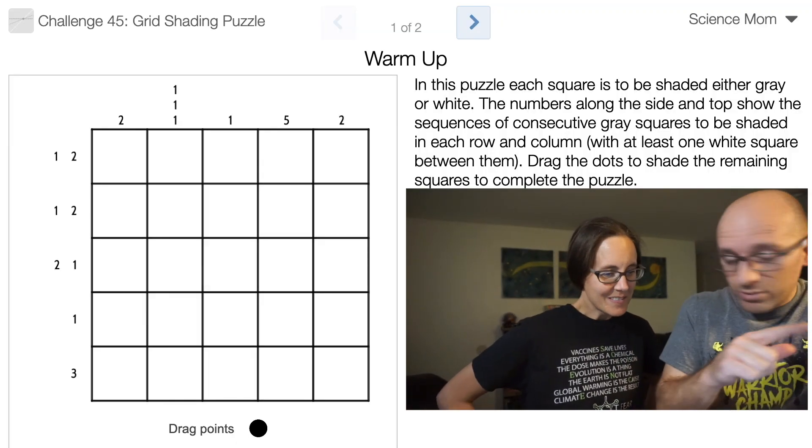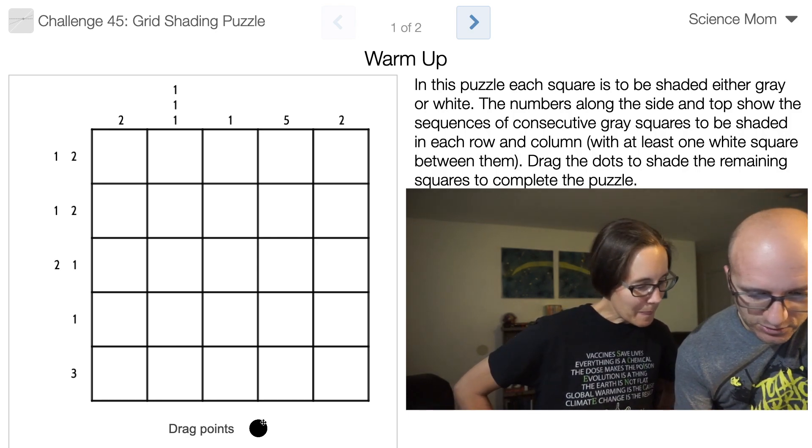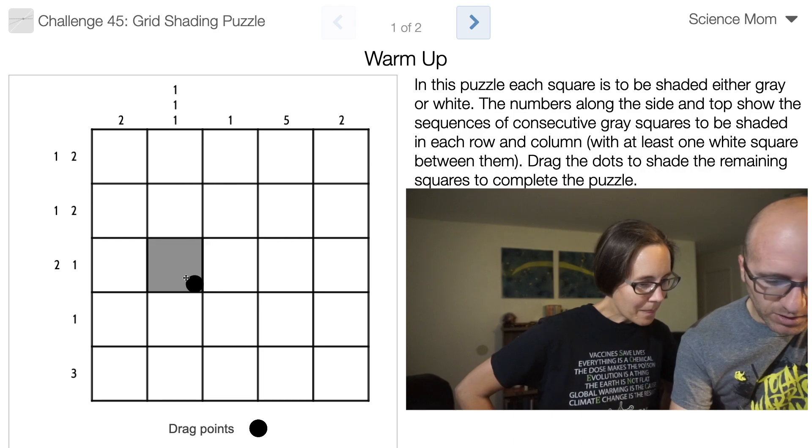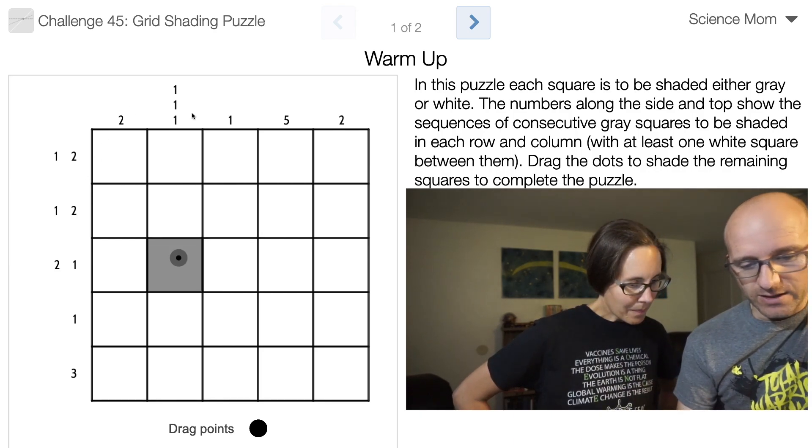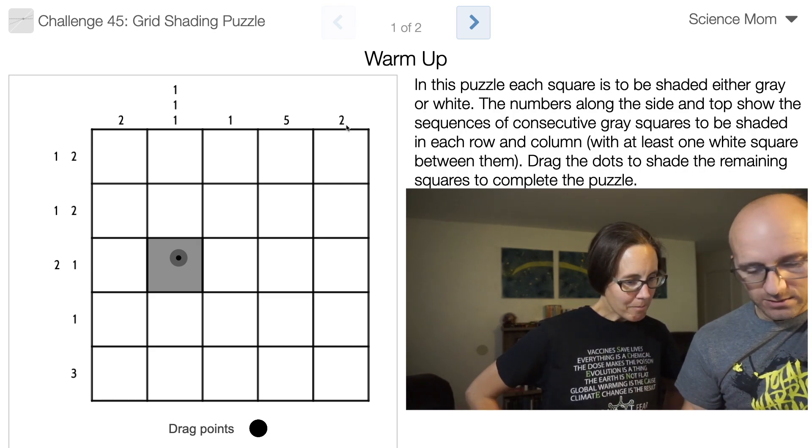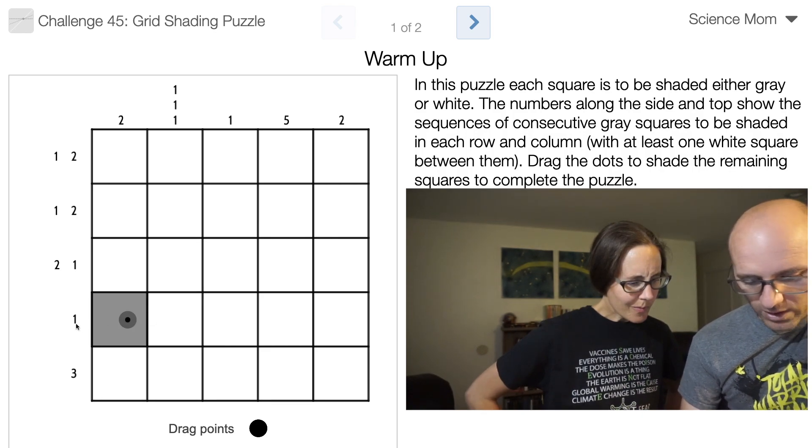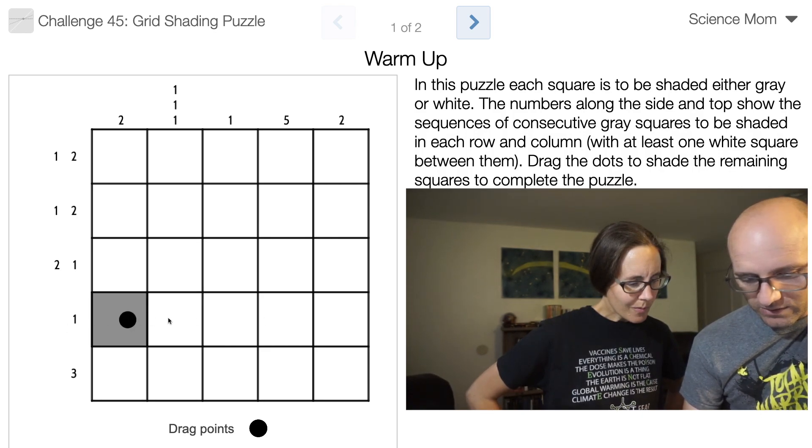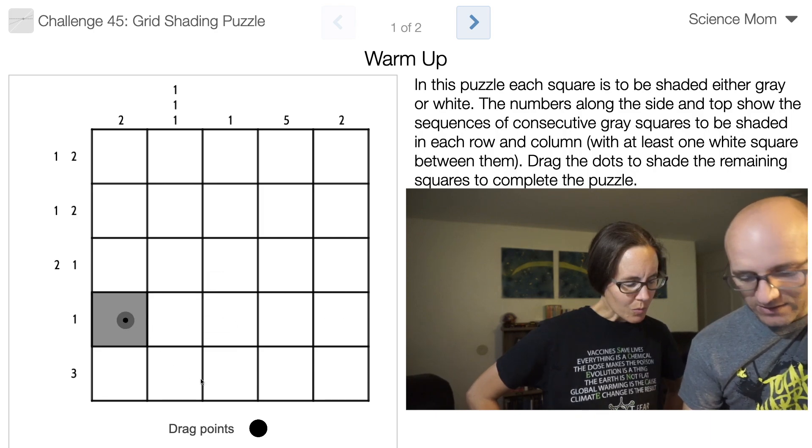Challenge 45 is a grid shading puzzle. What you are going to do is drag these dots up onto the grid somewhere. The numbers along the side of the grid tell you the pattern in which you'll find consecutive squares.